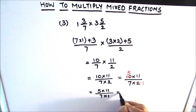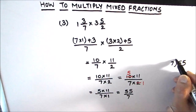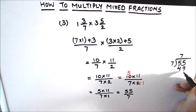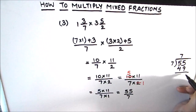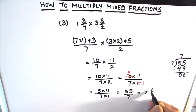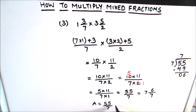Our numerator is now 5 times 11 and the denominator is 7 times 1, which equals 55 upon 7. We can also write the answer as a mixed fraction by dividing 55 by 7: 7 times 7 is 49, and the remainder is 6. So our mixed fraction is 7 and 6 upon 7. Our final answer is 55 upon 7 as an improper fraction, or 7 and 6 upon 7 as a mixed number.